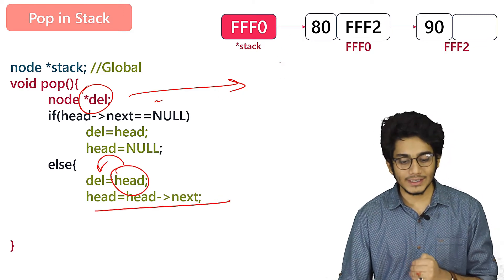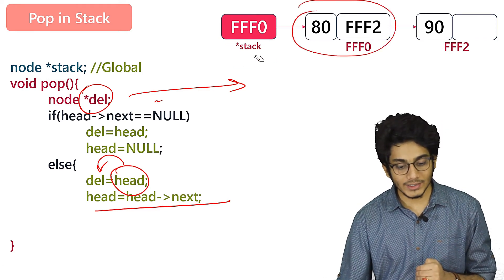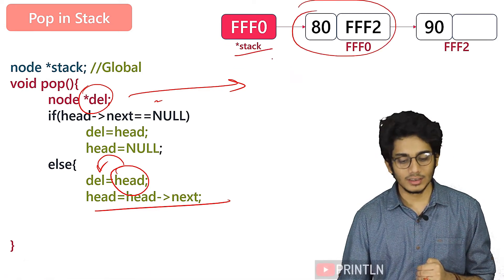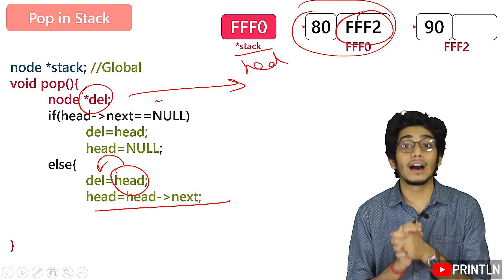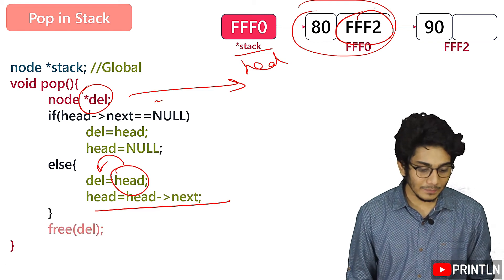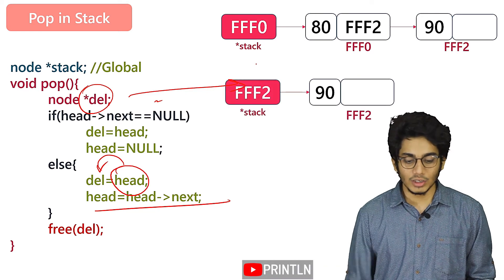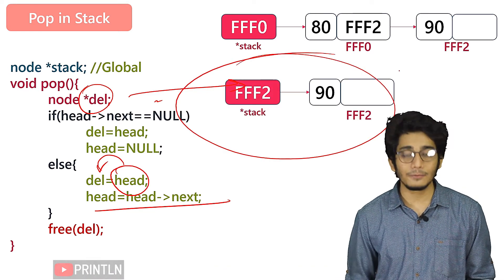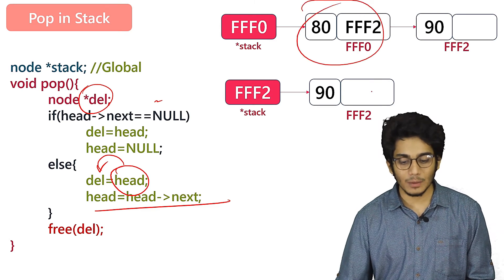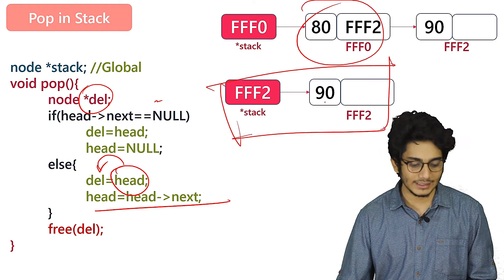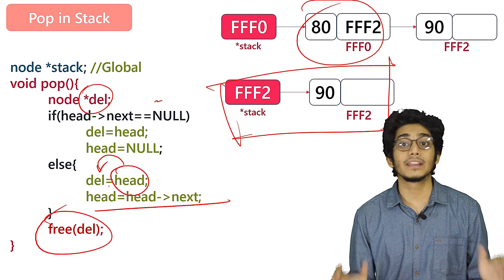If we move head to head->next, now head is pointing to this node — you can say stack or head. Now head will be pointing to fff2. After deleting the element, the updated stack will be 90. We have successfully popped 80 from our stack and currently have 90 within our stack. At last we'll de-allocate the memory using free.